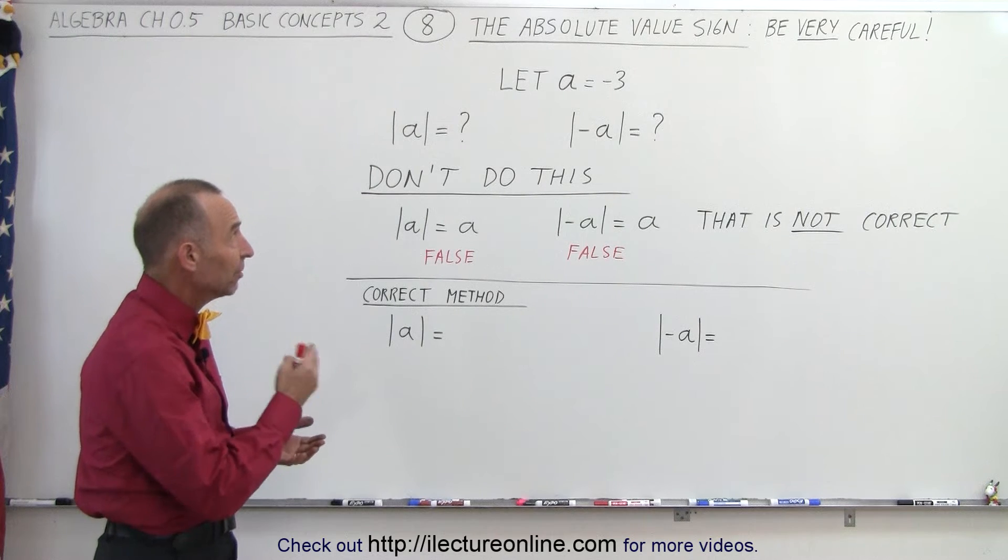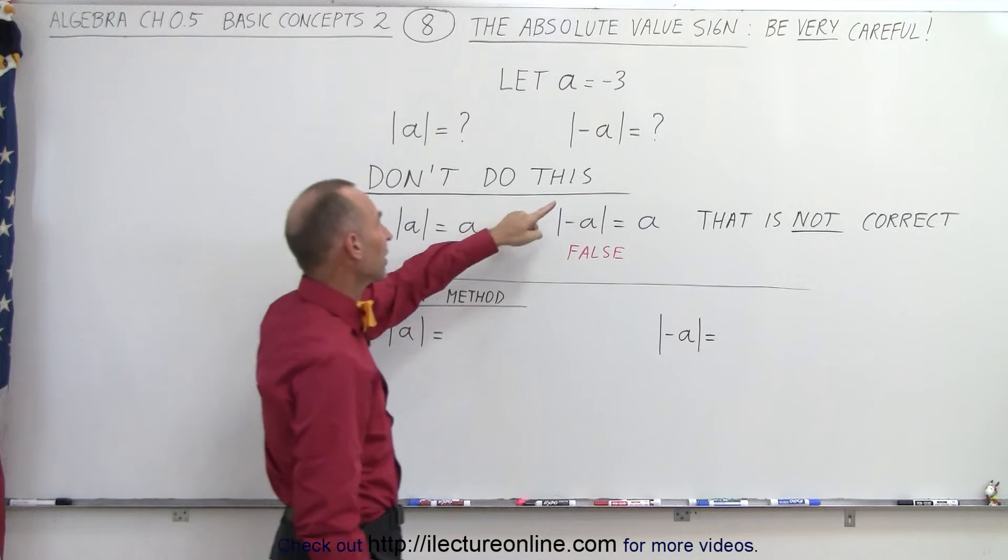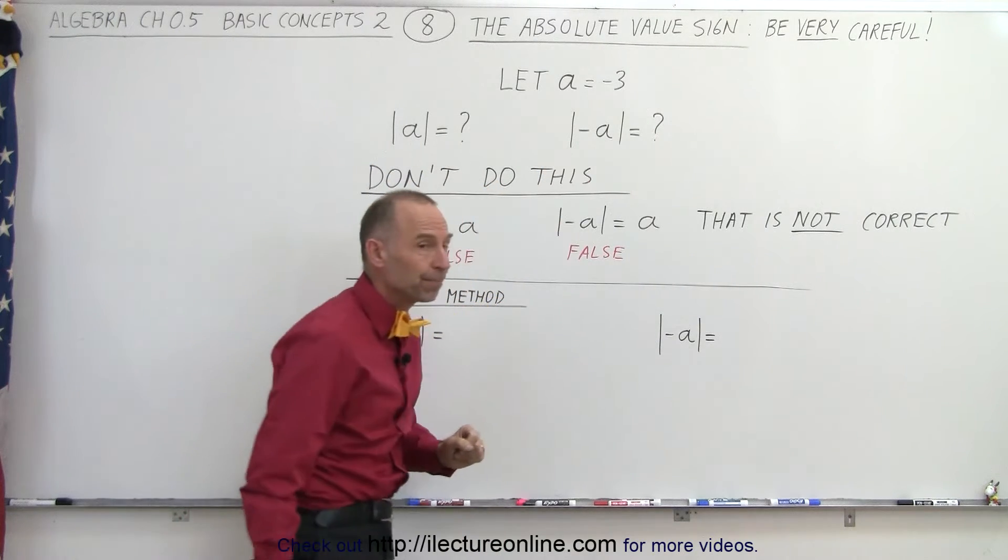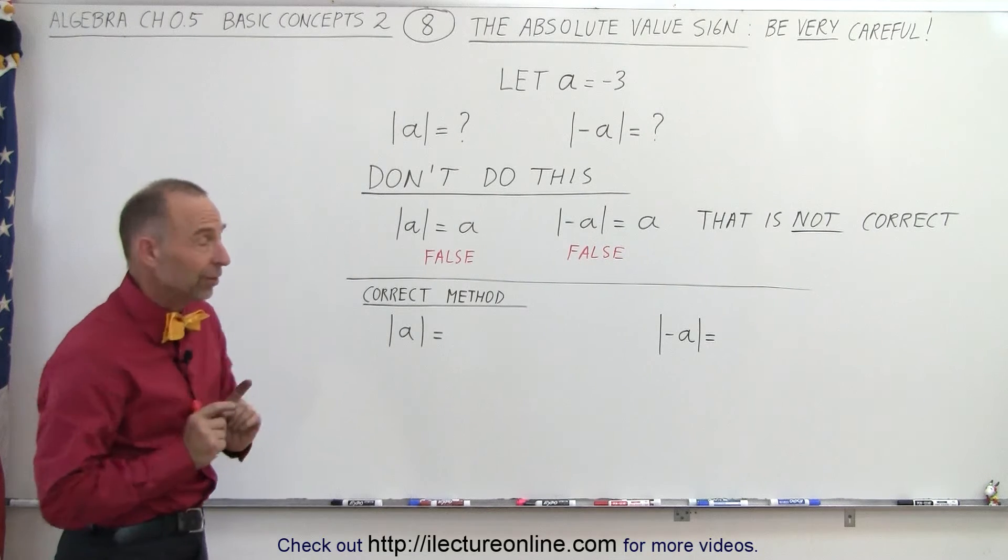Let's say a is equal to negative 3, and we're asked to find the absolute value of a and the absolute value of negative a. This is where a lot of students make mistakes, so don't do this.